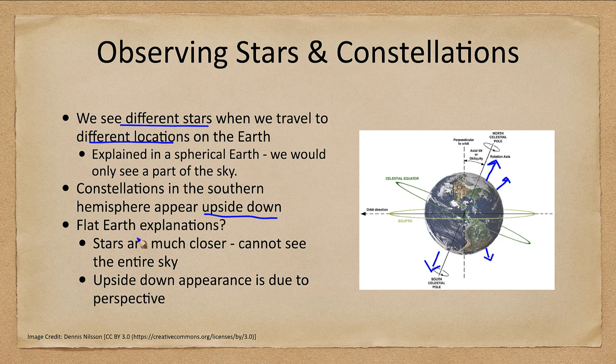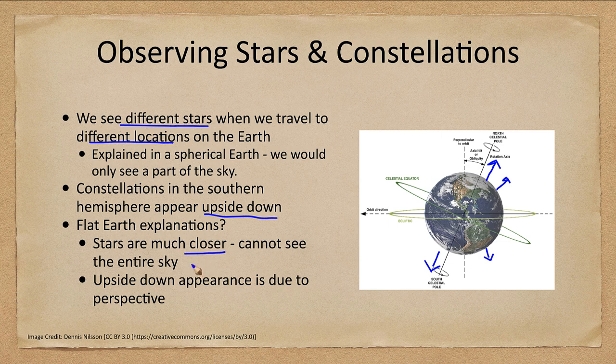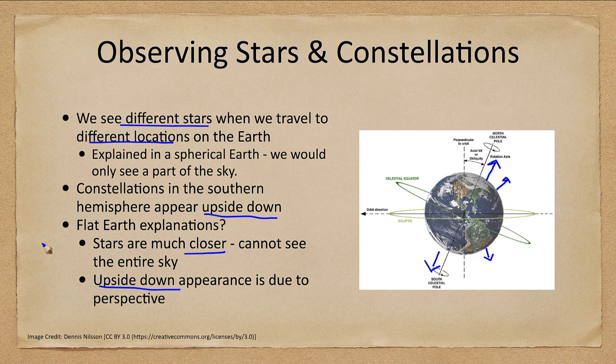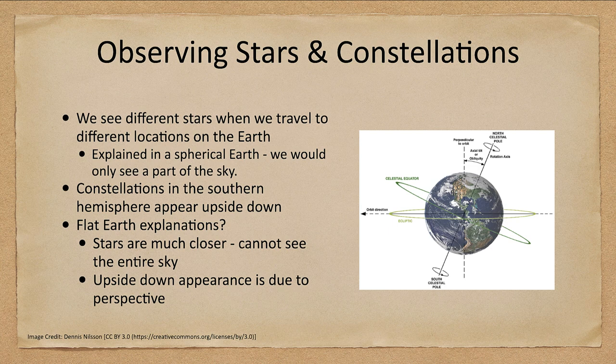Now the flat Earth explanation here is that the stars are actually much closer, so you cannot see the entire sky. The stars are not at the great distances that astronomers say they are, and the upside down appearance is due to the perspective of these much closer stars.